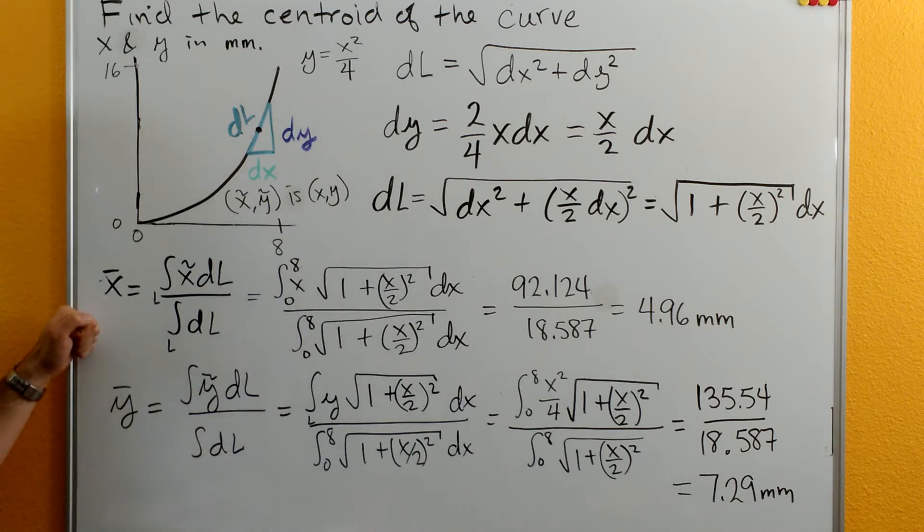We can set up our equations now for the x and y centroid. For the x centroid it's going to be the integral of x tilde which is the centroid of our differential length times our differential length divided by the integral of our differential length.